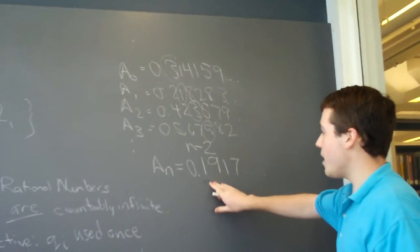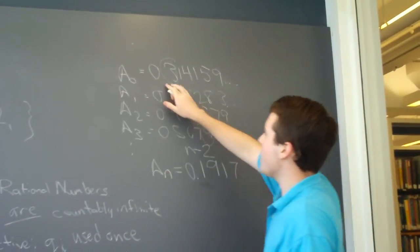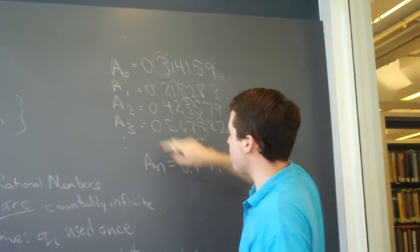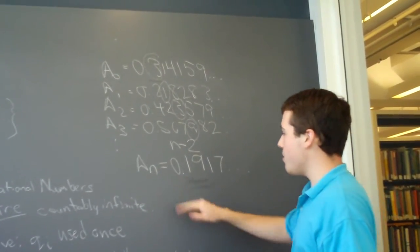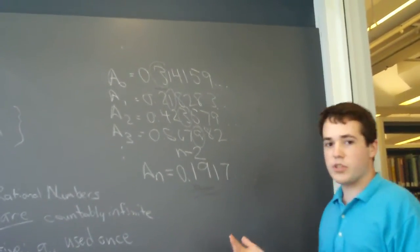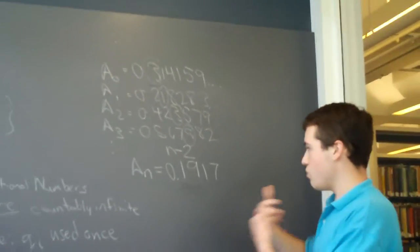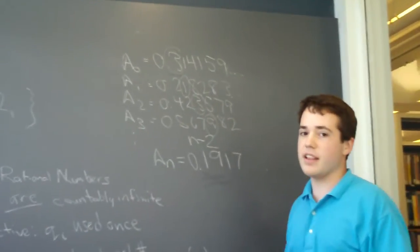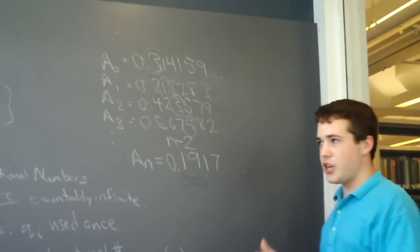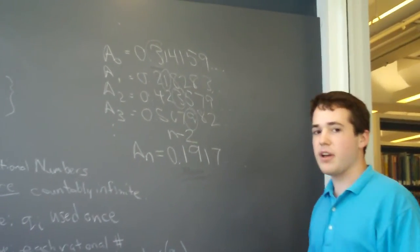Thus, we have created a number that differs in the digit of the subscript by some amount. So, if we claim that this number is already on the list, we just look to each digit and see that it differs from every number in at least one digit, since we have changed the digit of every number at least once.